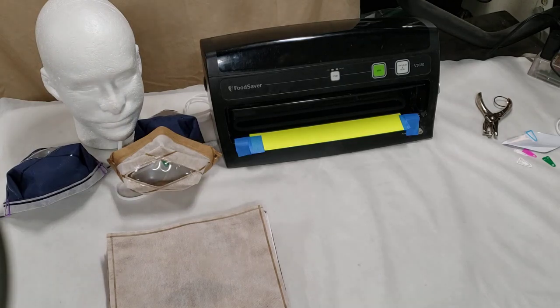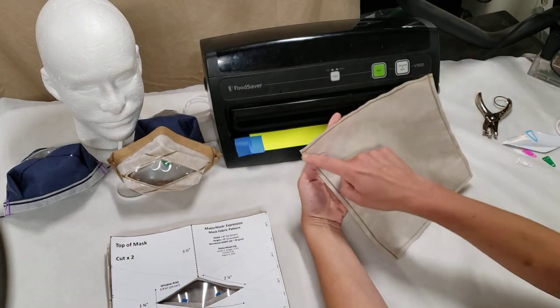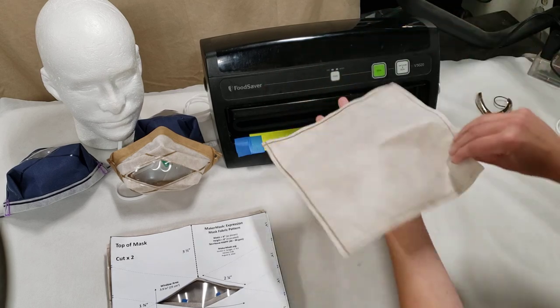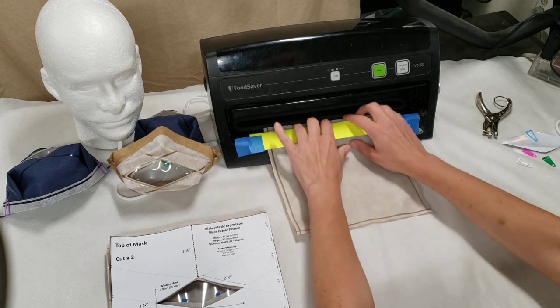All right, I'm going to attempt a whirlwind tour of the Maker Mask expression. So on the first step you heat seal all four sides to hold your materials together between two or three layers, just quickly showing you what that looks like.